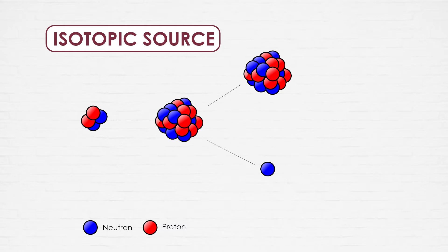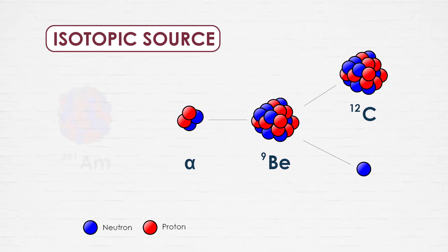The typical target nucleus is beryllium, a material that maximizes cross-sections and consequently the neutron yield. A good example of isotopic source is the americium-beryllium, an alpha-N source assumed as a reference in the ISO standards. Other examples are plutonium-beryllium, polonium-beryllium,